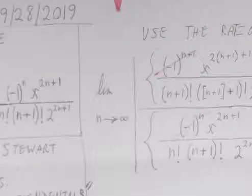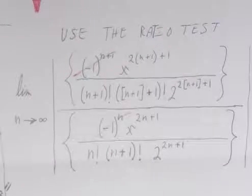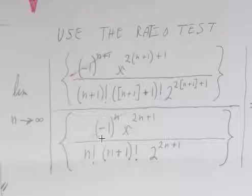Limit as n approaches infinity of absolute value of a sub n plus 1 divided by a sub n. So, using the ratio test and taking the nth term from J sub 1 of x, we get this thing. So, a sub n plus 1 is up here on the top and a sub n is down here on the bottom. We are using the absolute value signs for the ratio test.